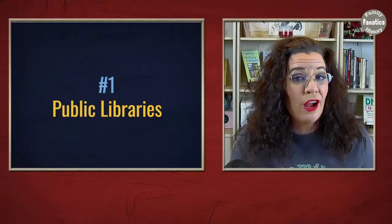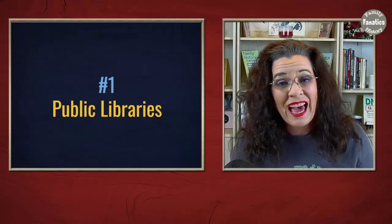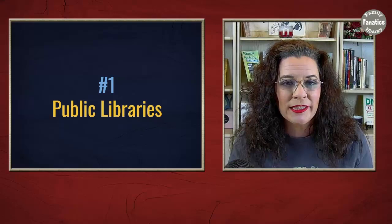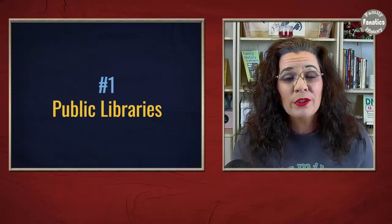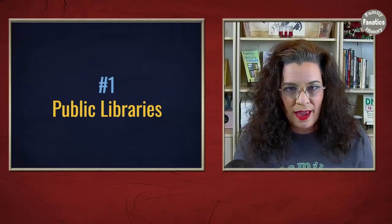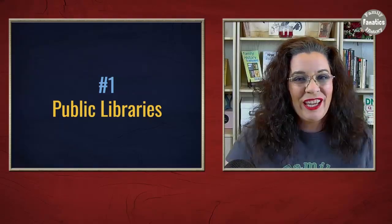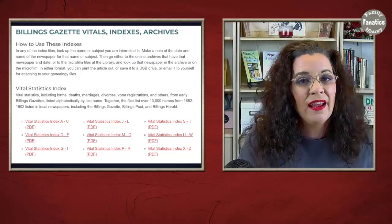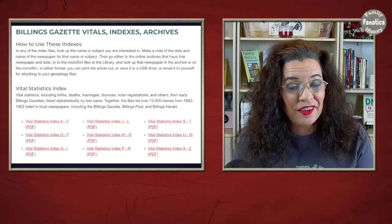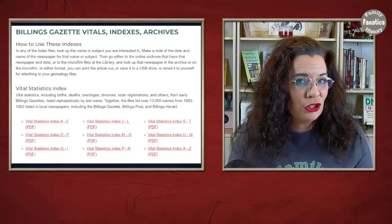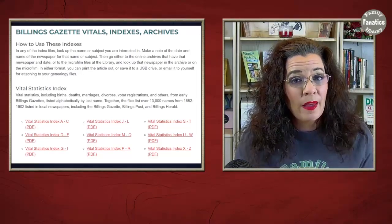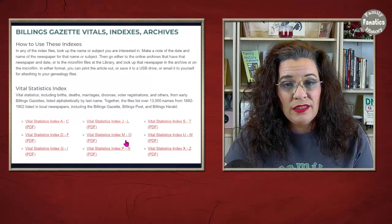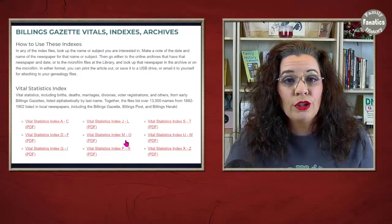The first little-known or underutilized place to look for marriage records is your public library. I can't tell you how many times I get contacted by a public librarian saying, 'Can you let people know we have great resources on our websites?' Well, here's their wish granted. For instance, in Montana there is the Billings Public Library website. When you go to the genealogical records there, you'll find the Billings Gazette — a newspaper. The public library has gone through and indexed a number of vital record images in the newspapers and told you where to find this information.